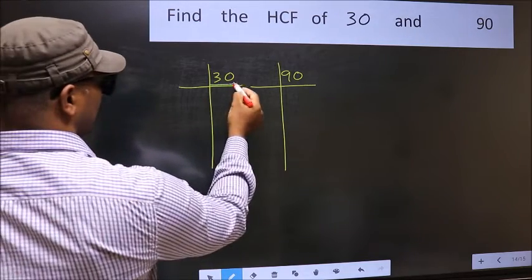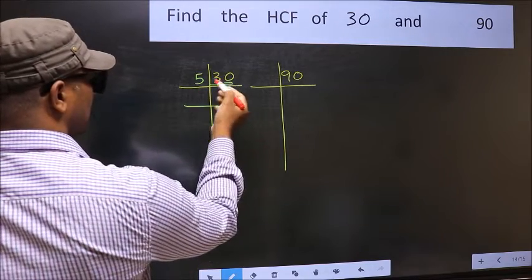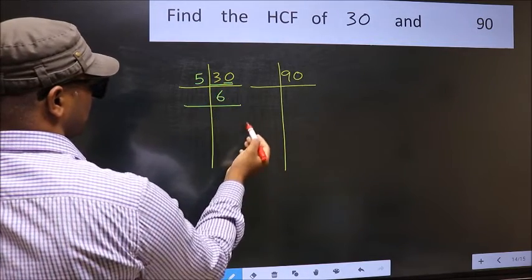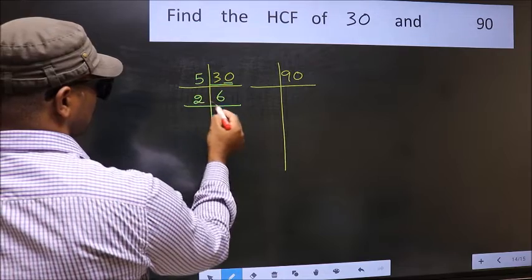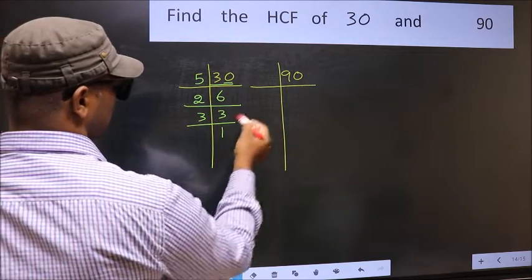Here we have 30. Last digit 0, so take 5. When do we get 30 in the 5 table? 5 times 6 is 30. Now 6 is 2 times 3. 3 is a prime number, so 3 times 1 is 3.